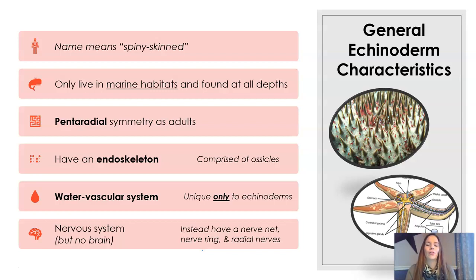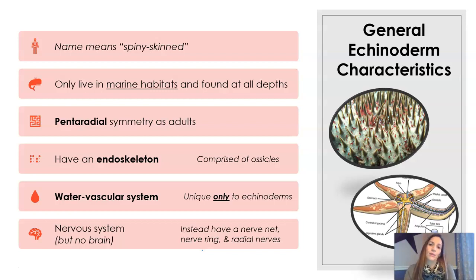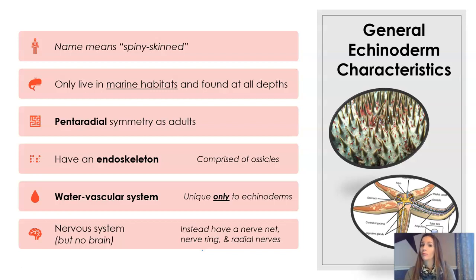They are the only organisms that have this system, and it's pretty cool. They also have a nervous system, but no brain. So we still don't have a well-developed brain, but there is still a nerve net and some other nerves going on within the body.